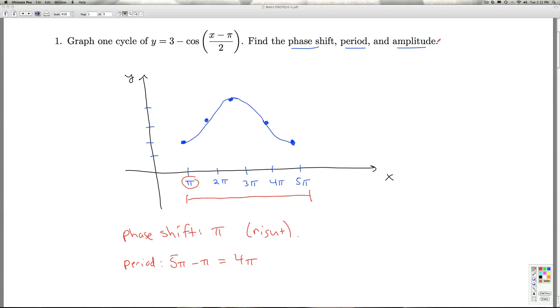And last but not least, the amplitude is how much the curve oscillates away from the baseline. So the baseline here, the baseline for the cosine function, is always the average, I should say, of the high point and the low point. So the high point was 4, the low point was 2. If you average 4 and 2, that gives you the baseline 3. And so if I look and see how far this curve meanders from y equals 3, it goes up 1 and down 1, so that means the amplitude is 1.